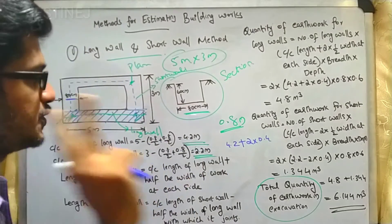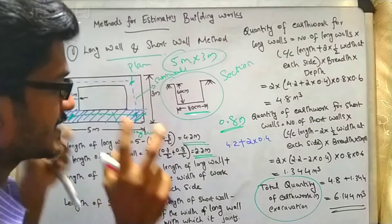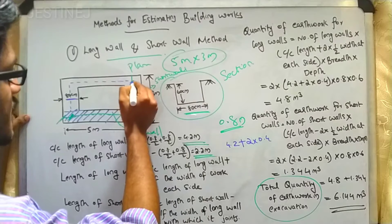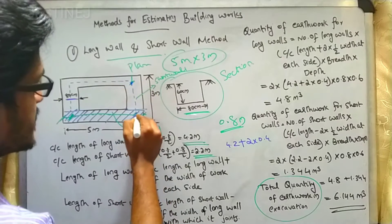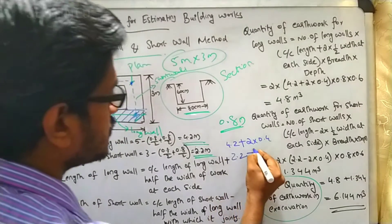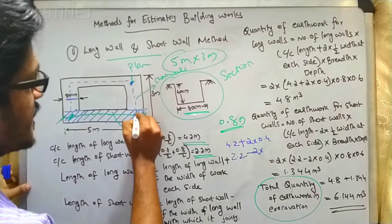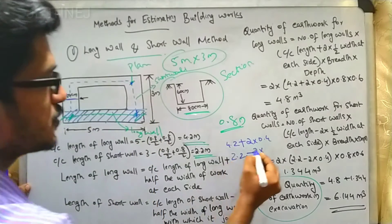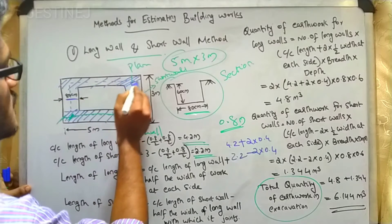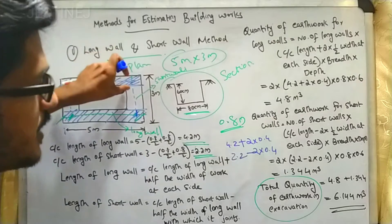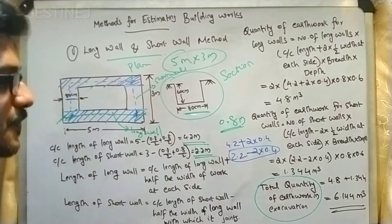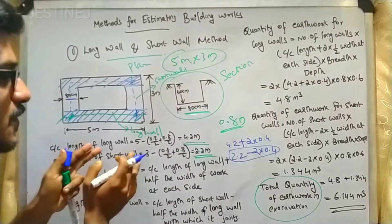The total number of short walls is also 2. For the length of the short wall, it is the center-to-center distance from this center to this center, which is 2.2 meter. However, we subtract 2 multiplied by 0.4 because those corner portions are already included in the long wall calculation. So the length of short wall is 2.2 minus 2 multiplied by 0.4.